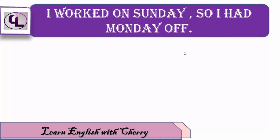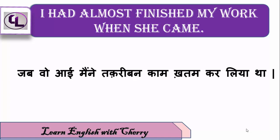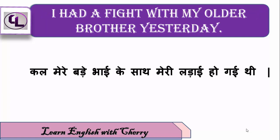अब यहाँ थोड़ा सोचिए इसकी हिंदी क्या बनेगी? मैंने Sunday को काम किया ताकि Monday को मुझे off मिल सके। दिवाली के कारण स्कूल नहीं लगा था — We had no school on account of Diwali. इसी तरह We had no office भी कह सकते हैं। जब वो आई मैंने तकरीबन काम खत्म कर लिया था — I had almost finished my work when she came. कल मेरे बड़े भाई के साथ मेरी लड़ाई हो गई — I had a fight with my older brother yesterday. Simply: I had a fight yesterday.